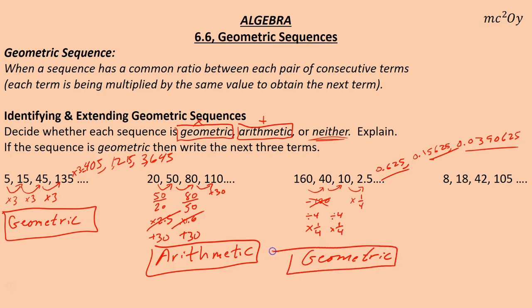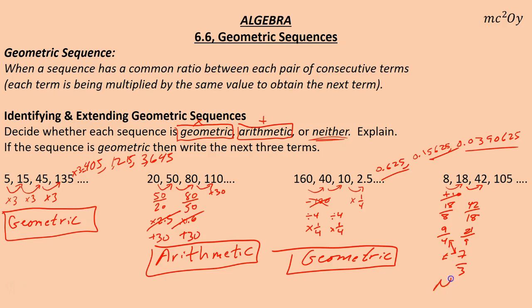For the last one, it looks like I'd have to be adding 10, and I'm definitely not adding 10 there, so that doesn't work. When I check the ratios I get 18 eighths, which is 9 fourths, and then 42 eighths, which reduces to 21 ninths, then 7 thirds. These two ratios are not equal, so this sequence is neither geometric nor arithmetic.